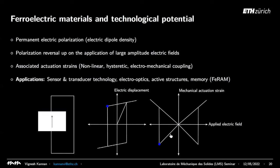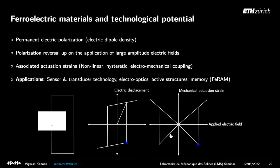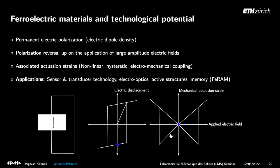We're now talking about a different problem: ferroelectric materials and electromechanical response. A ferroelectric material is characterized by a permanent electrical polarization in a particular direction. When you apply a large amplitude electric field opposite to this permanent electrical dipole, you switch it. The switching is nonlinear and dissipative, resulting in electrical hysteresis and coupled mechanical actuation strain — a thermoelectromechanical coupled problem. Applications range from transducers to active structures, and more recently nanoelectronic products exploiting these switching processes.